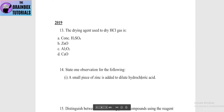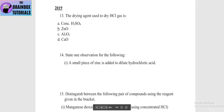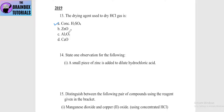In the 2019 questions: the drying agent used to dry HCl gas is — option A: concentrated H2SO4, option B: ZnO, option C: Al2O3, option D: CaO. The correct answer is option A — concentrated H2SO4.